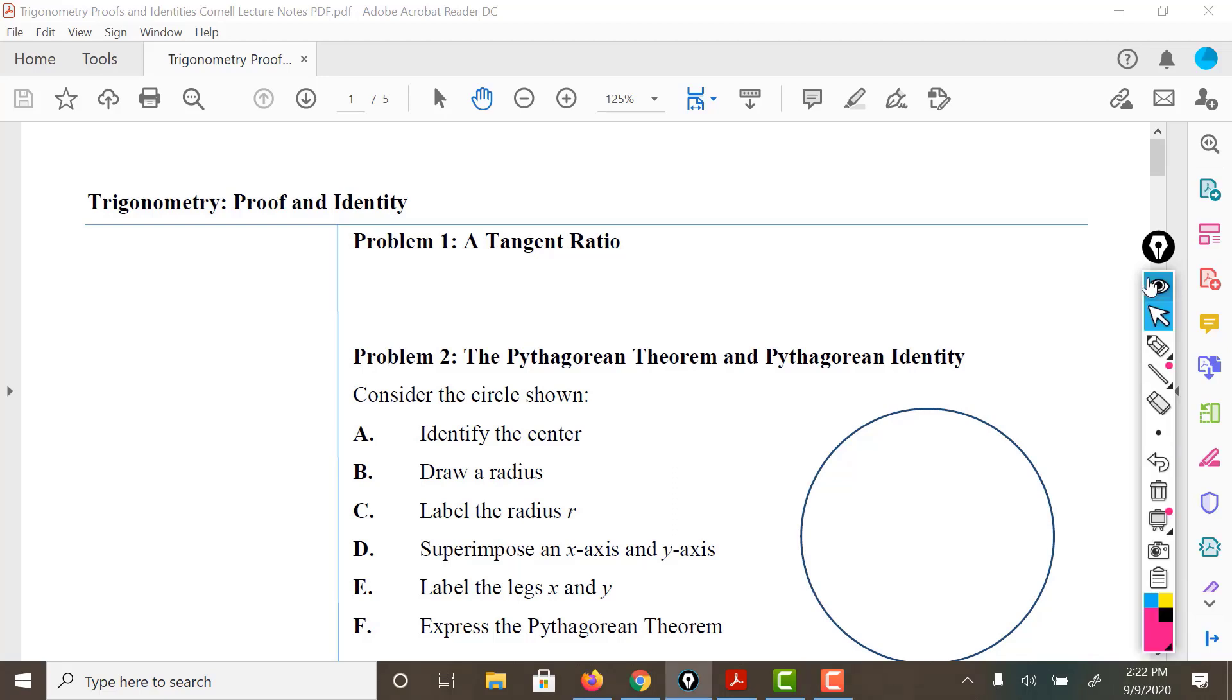Let's go ahead and start off with tangent. So recall by definition that sine of theta is opposite over hypotenuse, and recall that cosine of theta is adjacent over hypotenuse.